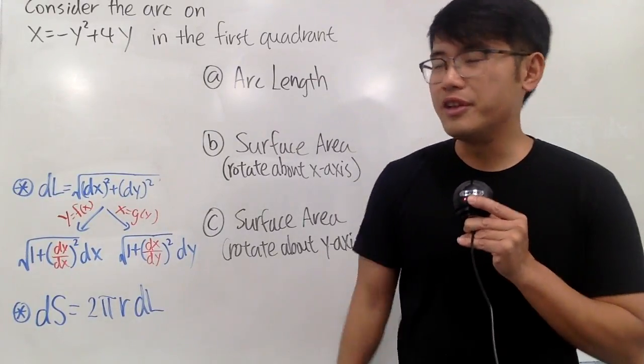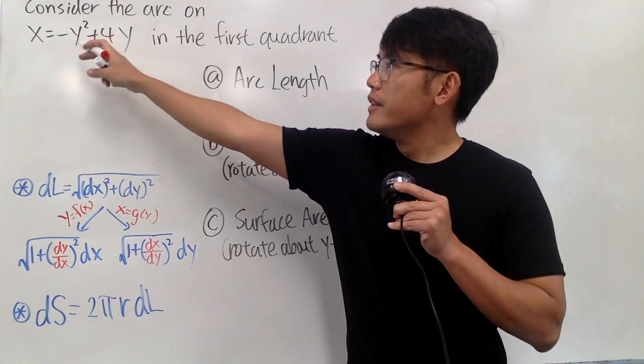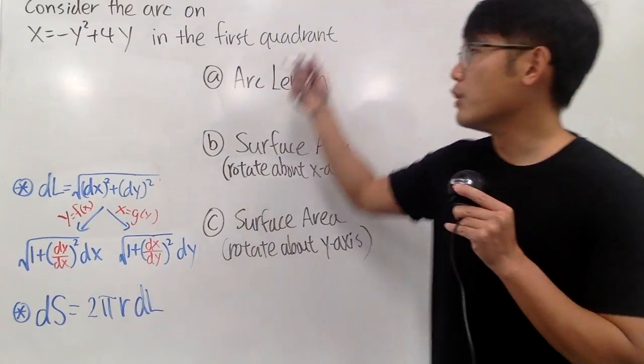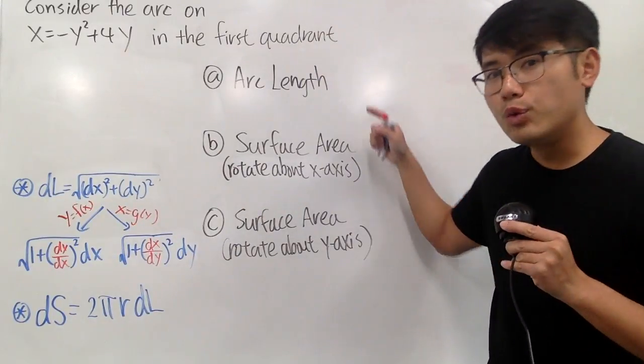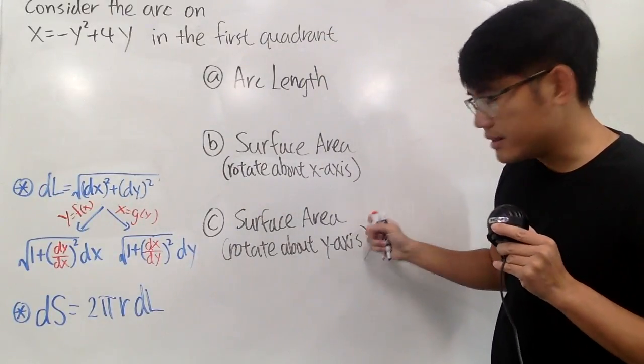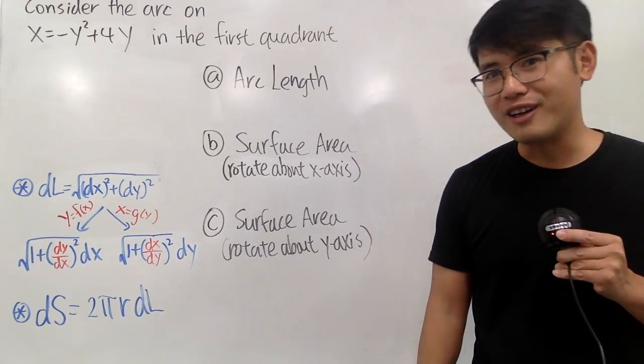Okay, in this video, we are going to first consider the arc on the curve x equals negative y squared plus 4y, and we'll focus in the first quadrant, and we will find the arc length, surface area, and surface area, depending on how we rotate the arc.